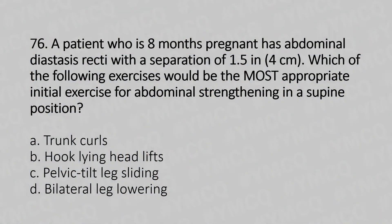A patient who is 8 months pregnant has Abdominal Diastasis Recti with a separation of 1.5 inch or 4 cm. Which of the following exercise would be most appropriate? Initial exercise for abdominal strengthening in a supine position: Option A trunk curls, Option B hook lying head lifts, Option C pelvic tilt, Option D leg sliding, Option E bilateral leg lowering.